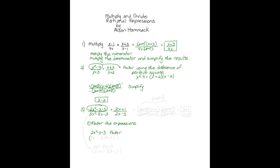Two x squared minus x minus three factors into two x minus three times the quantity x plus one — the inner product gives us negative one. Next we factor the denominator, three x squared minus eight x minus three, which factors into three x plus one times the quantity x minus three.